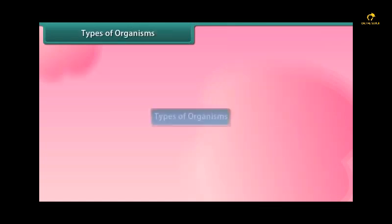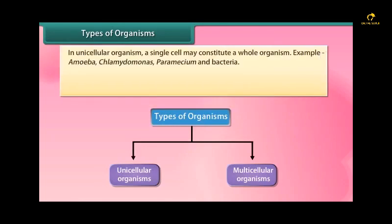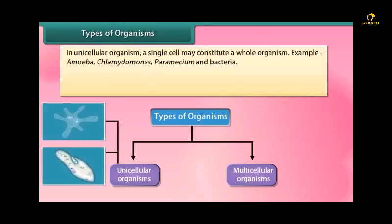Types of organisms: Unicellular organisms and multicellular organisms. In unicellular organisms, a single cell may constitute a whole organism. Example: amoeba, chlamydomonas, paramecium and bacteria.